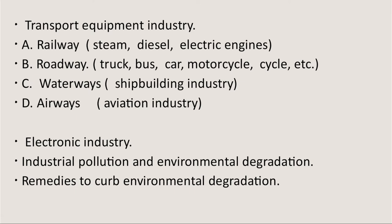Railways manufacture equipment for its own requirement — for example, railway engines, passenger coaches, and goods coaches. In our country we have three types of railway engines: steam engine, diesel engine, and electric engine. The steam engine is now used only for heritage trains for tourism purpose. Diesel and electric engines are produced at Chitaranjan Locomotive Works in West Bengal.